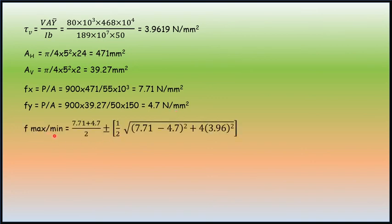Principal stresses fmax or minimum. Substituting the value of fx and fy into the equation and value of τv into the equation. The equation is fx plus fy by 2 plus or minus half square root of (fx minus fy) square plus 4 times τv square. Here minus because it is pre-stressing in the opposite direction of vertical. fmax is 10.44 Newton per mm square and fmin is 1.97 Newton per mm square.